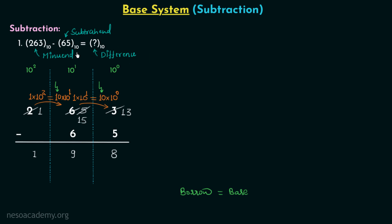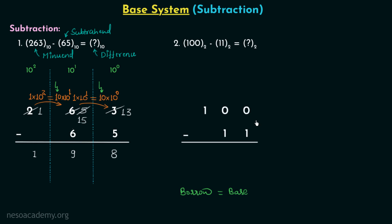I hope you now understand the entire process of subtraction in a given number system and why the borrow is equal to the base of the number system. We are going to use this directly in other number systems. Now let us move on to the second question: we want to subtract 11 in binary from 100 in binary and note down the result in binary. The minuend is 100 and the subtrahend is 11, and after placing the digits as per their place values we can start the subtraction process.